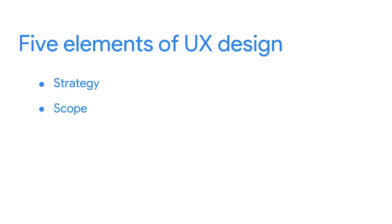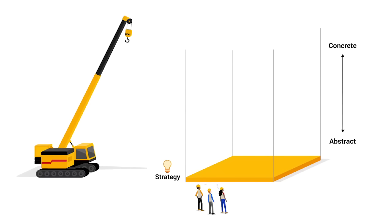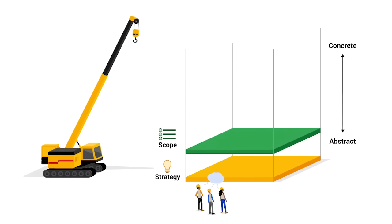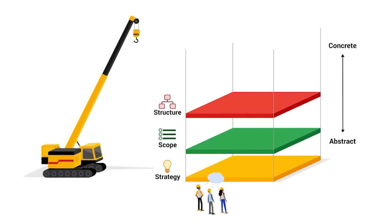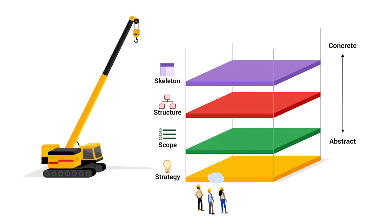The five elements are: strategy, scope, structure, skeleton, and surface. Each element refers to a specific layer involved in creating the user experience, and each layer is dependent on the one below it. The bottom layer is strategy, where you'll define the user's needs and business objectives. The next layer is scope, where you'll determine what you're building and decide on features and content. The third layer is structure, where you'll figure out how to organize your design and how the user will interact with it. The next layer is skeleton — similar to how the layout of our bones shape our skin, this layer helps detail how the design works, but the user won't see these inner workings.